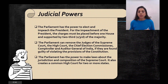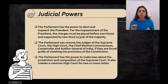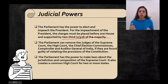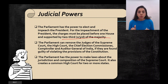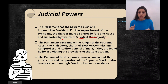Then comes the judicial power. Parliament has the power to elect the President as well as impeach the President. For impeachment — that is, to remove the President — two-thirds majority of both Houses is required. Parliament appoints the President — both Houses of Parliament plus state legislative assembly members elect the President. Parliament can also remove judges of the Supreme Court, High Court, Chief Election Commissioner, and Comptroller and Auditor General of India if found guilty of violating constitutional provisions.